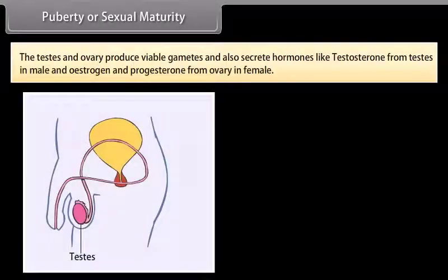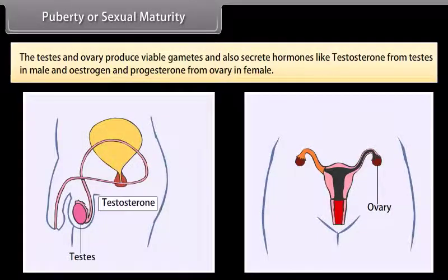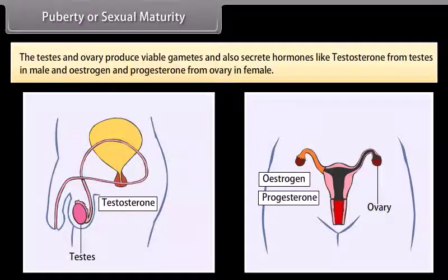The testes and ovaries produce viable gametes and also secrete hormones: testosterone from the testes in males, and estrogen and progesterone from the ovaries in females.